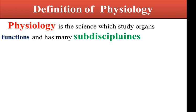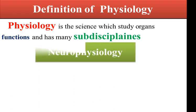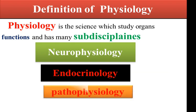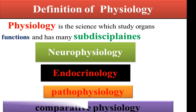The definition of physiology: physiology means the science which studies organ function, and it has many sub-disciplines — other branched sciences — like neurophysiology, the science which studies the physiology of the nervous system; endocrinology, the science which studies the endocrine glands; pathophysiology, which studies the mechanism of disease; and comparative physiology, which studies and compares the function of many different organs and species.